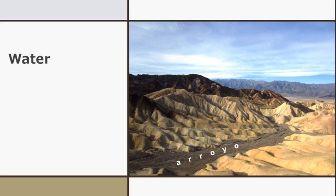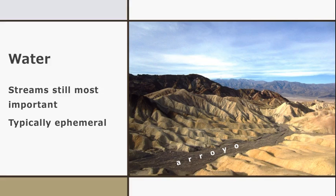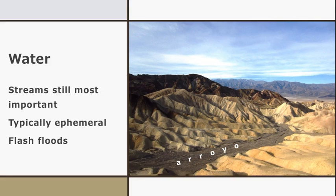Wind erosion is more important in deserts than in other biomes, because the lack of vegetation and moisture makes it easier for wind to pick up and remove sediment and soil. However, streams are still the most important sculptors of the landscape in Earth's arid regions. These streams are typically ephemeral, meaning they only contain water immediately after rain. Rain events are infrequent but can be intense, with several inches falling during short-lived thunderstorms, resulting in large volumes of water running off the nearly barren and impermeable bedrock into the previously dry stream channels, commonly called arroyos or washes. This can create potentially deadly flash floods, where an arroyo goes from being bone dry to carrying a turbulent flood of water and sediment, helping erode the steep-sided canyons characteristic of many desert landscapes.